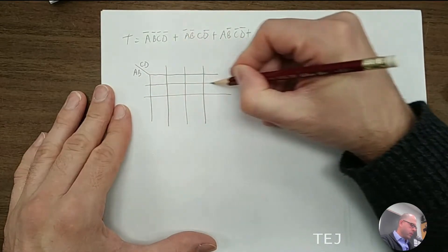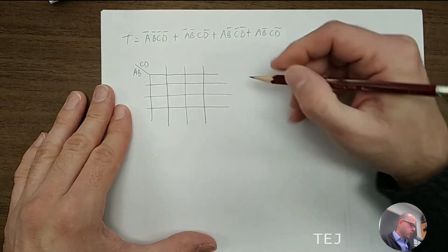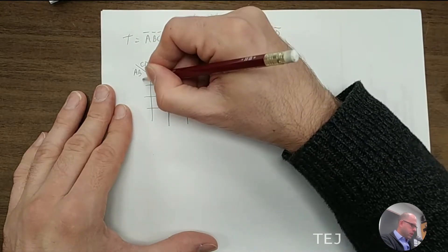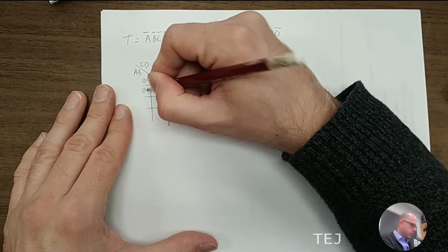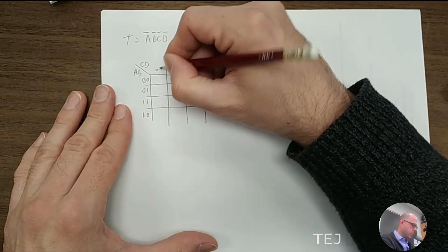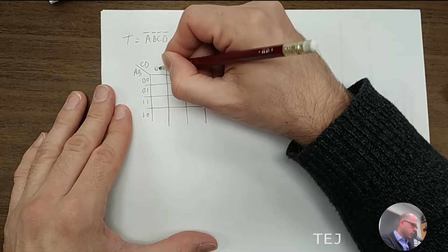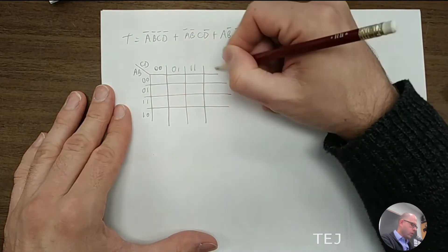So this time, there are more rows. So we still have the same numbering, gray encoding, 0-1, 1-1, 1-0, 0-0, and then 0-0, 0-1, 1-1, 1-0.